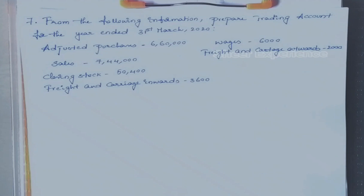Our next problem: prepare trading account for the year ended 31st March 2020. Adjusted purchases: 6,60,000. Sales: 7,44,000. Closing stock: 50,400. Freight and carriage inwards: 3,600. Wages: 6,000. Freight and carriage outwards: 2,000. In this problem we have two new accounts: adjusted purchases and freight and carriage outwards.